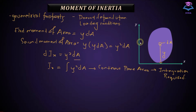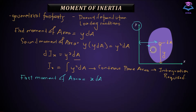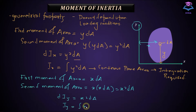Similarly, if you want moment of inertia with respect to the Y axis, the perpendicular distance between the DA element and the Y axis is X. Following the same procedure, the first moment of area is X·DA, and the second moment of area gives dIY = X²·DA. Integrating both sides gives IY = integral of X²·DA.